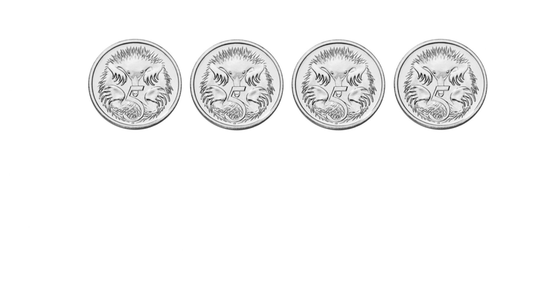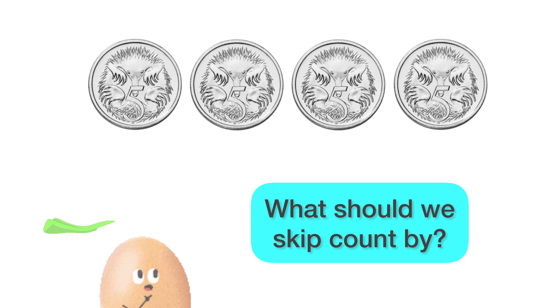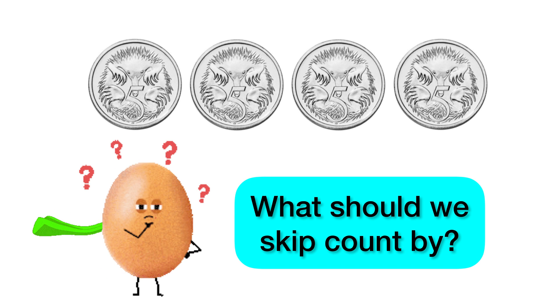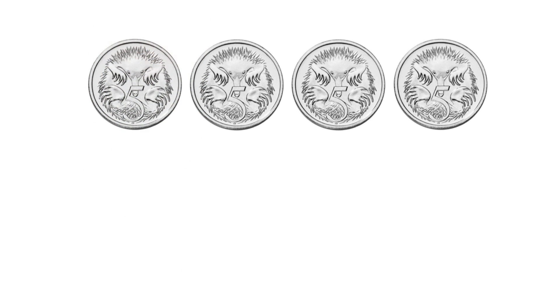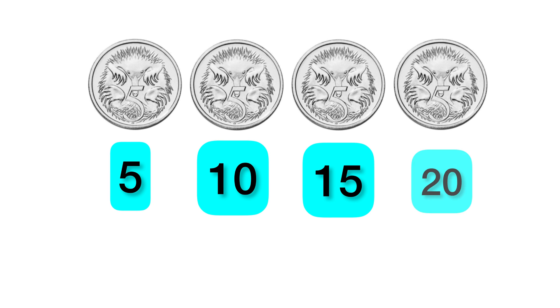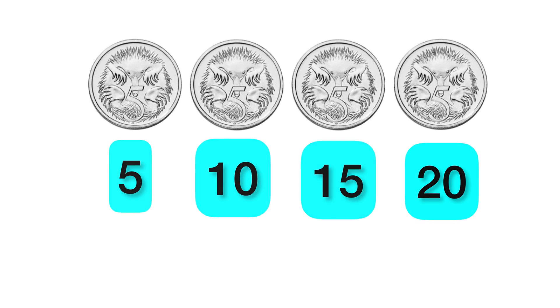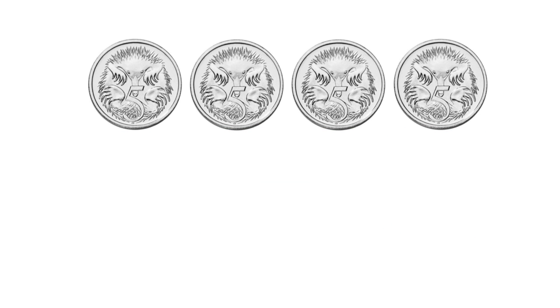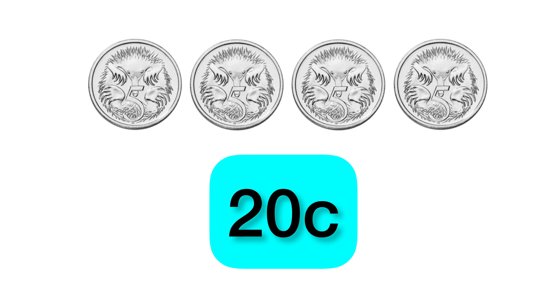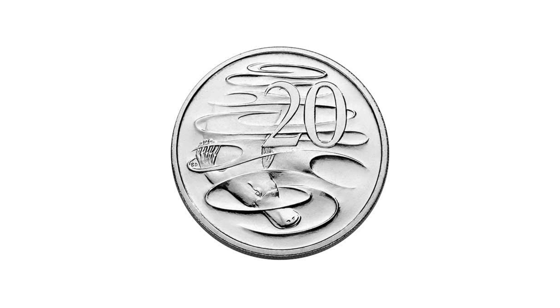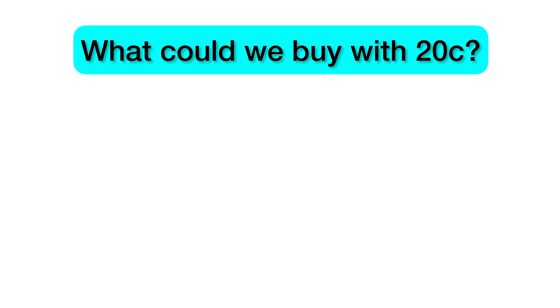Now we're going to add 5 cent coins together. What number should we skip count by? 5, 10, 15, 20. So all together we have 20 cents. These four coins make up the same value as a single 20 cent coin. What could we buy with 20 cents?